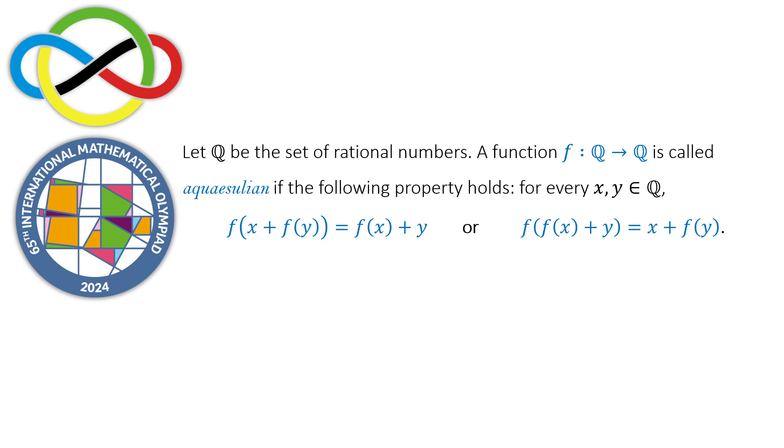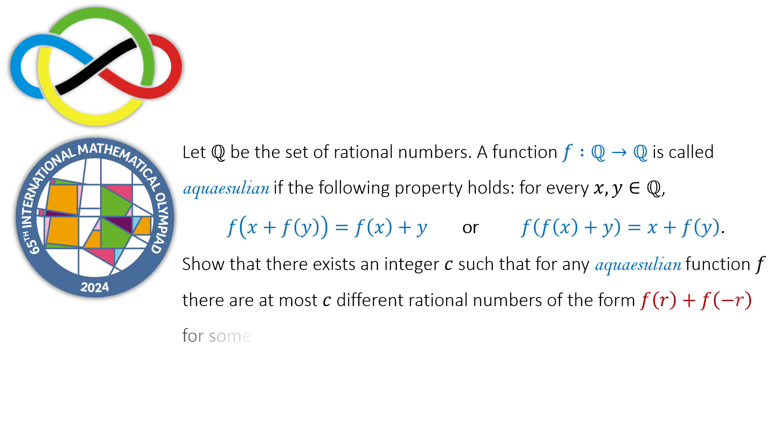or f(f(x) + y) = x + f(y). Show that there exists an integer c such that for any Aquasoulian function, there are at most c different rational numbers of the form f(r) + f(-r) for some rational number r, and find the smallest possible value of c.